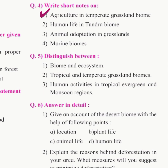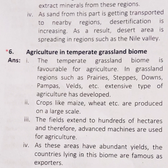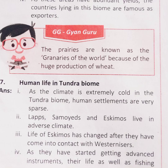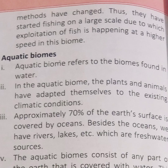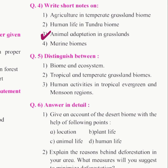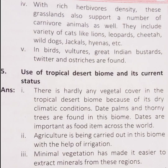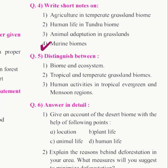Question 4: write short notes on the following. First: agriculture in temperate grassland biomes. Second: human life in tundra biome. Third: animal adaptation in grassland. Fourth: marine biomes.